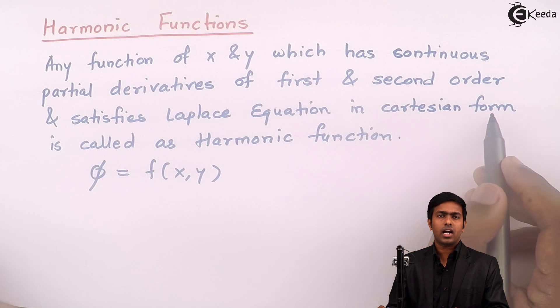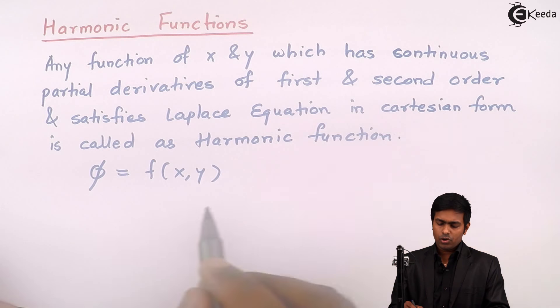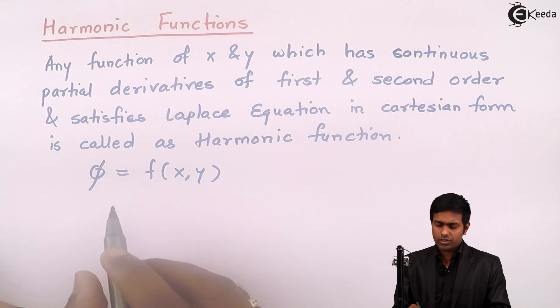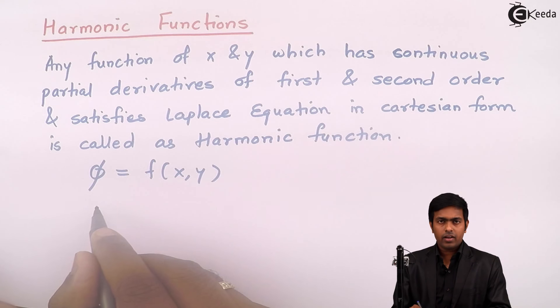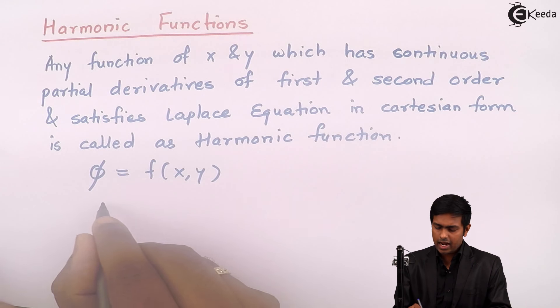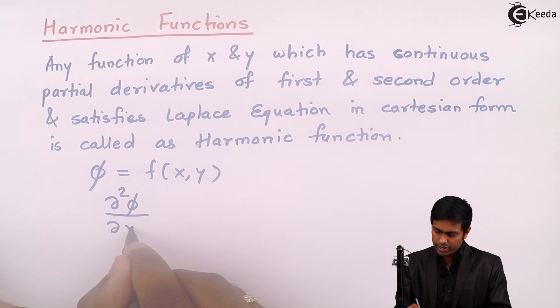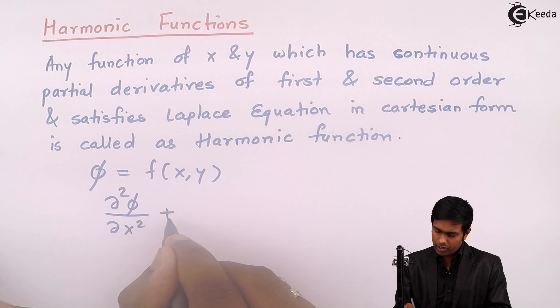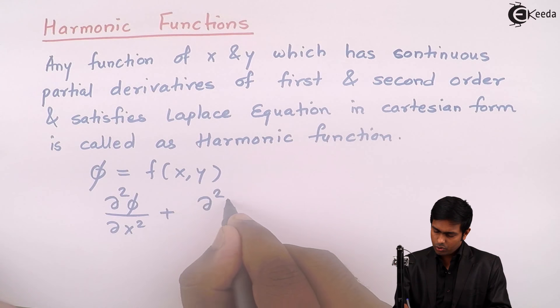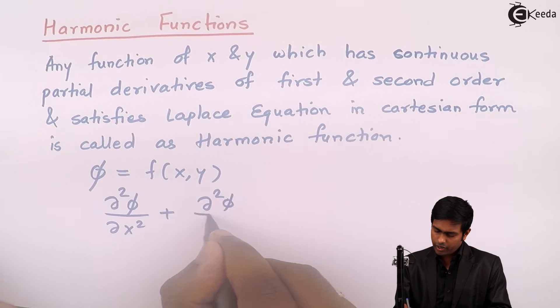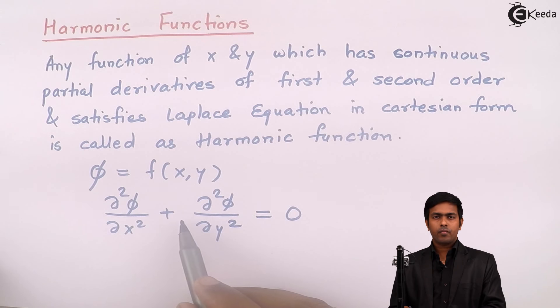What is the Laplace equation in Cartesian form? For this function phi, we can say: ∂²φ/∂x² + ∂²φ/∂y² = 0. This is the Laplace equation in Cartesian form.